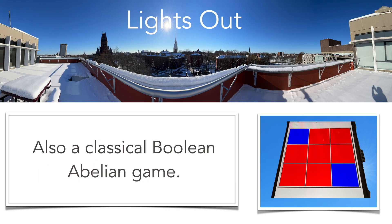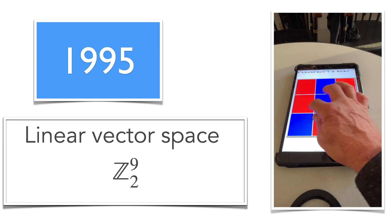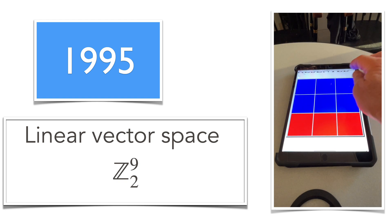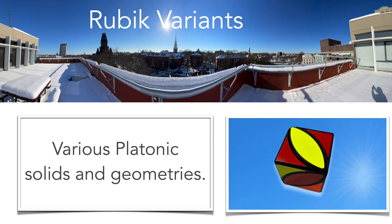The Lights Out game is also relatively old, from the 90s — there were electronic games like this. It's usually a 5x5 board; I have written a JavaScript program which uses a 9x3 board. There are 2^9 possibilities here, and it's just a linear algebra problem to solve this puzzle.